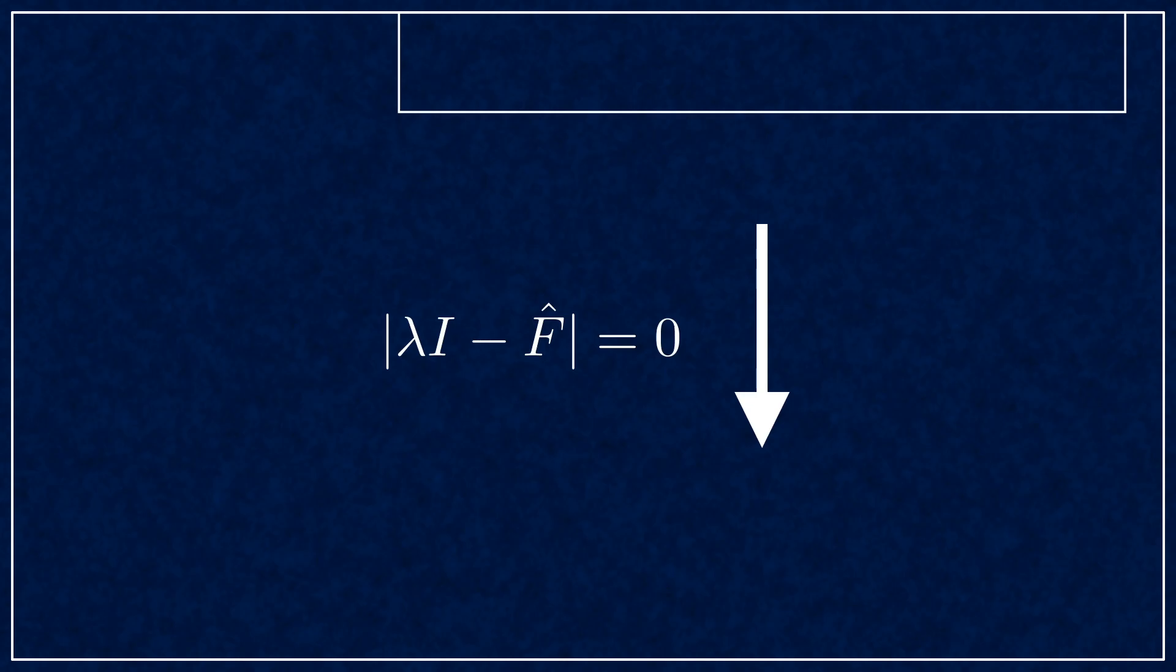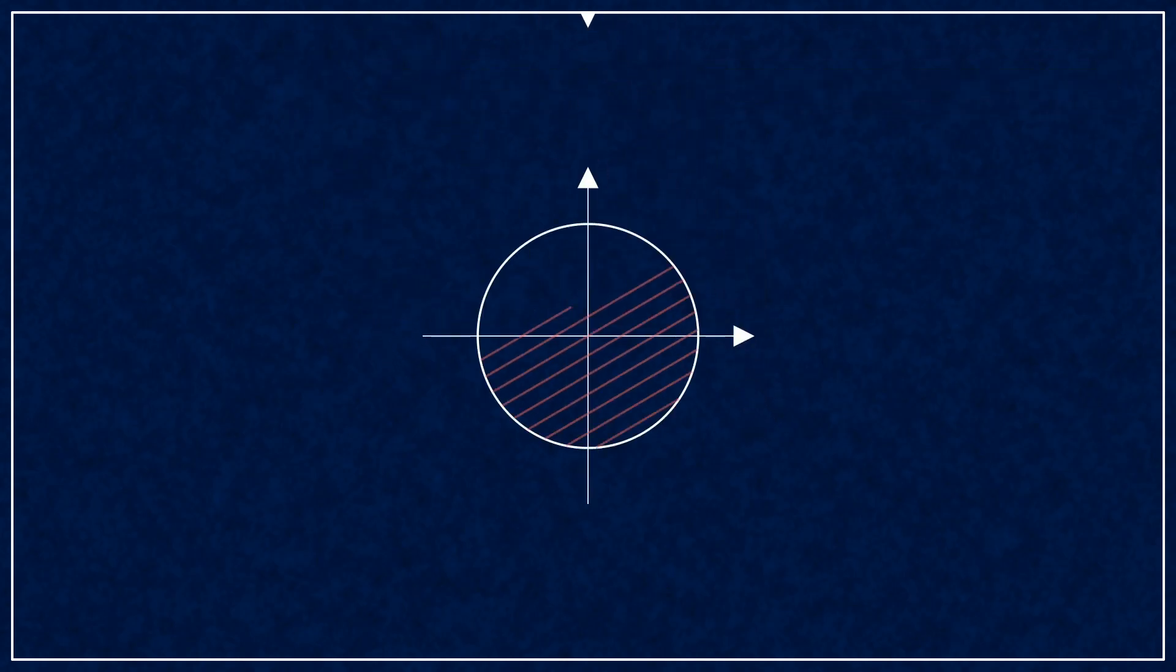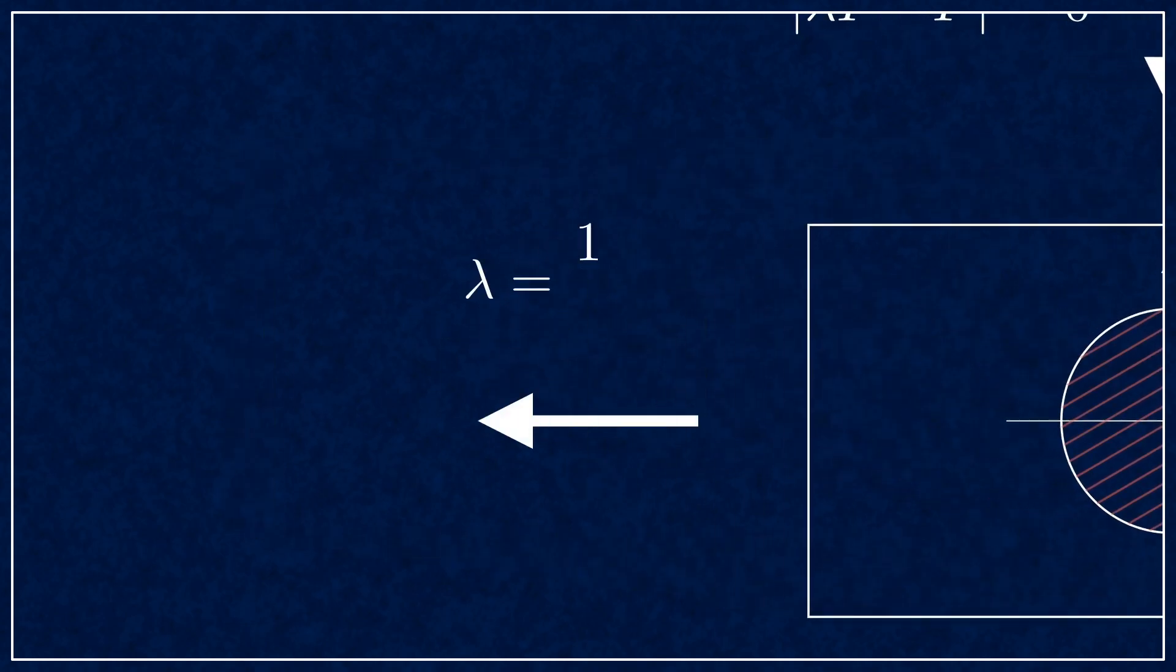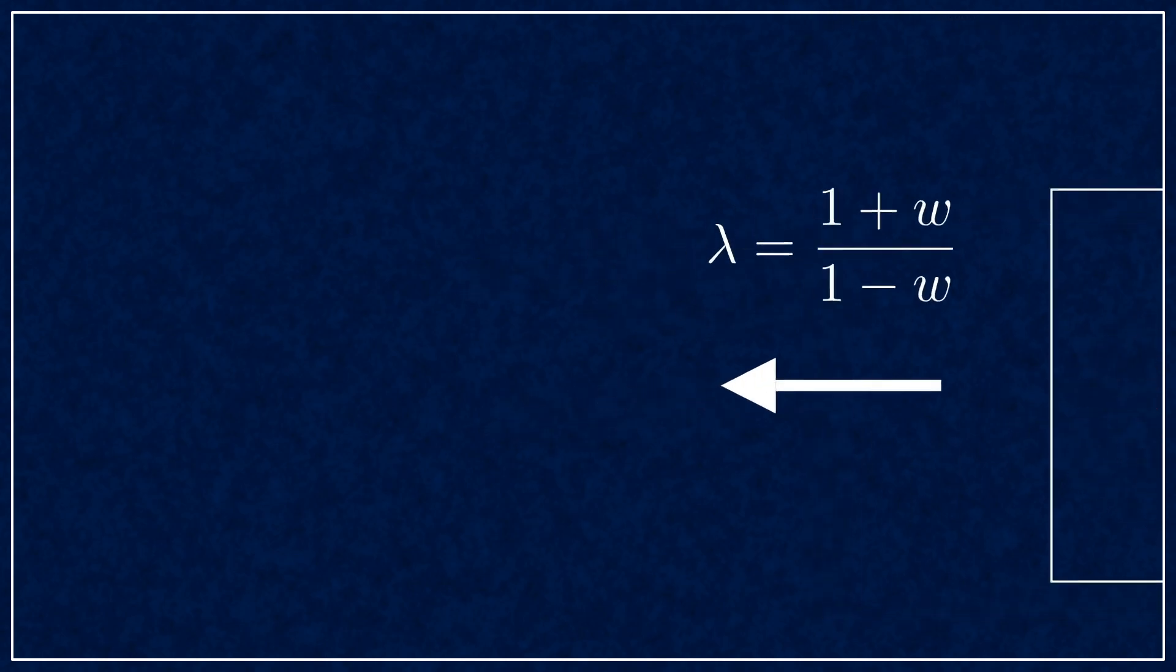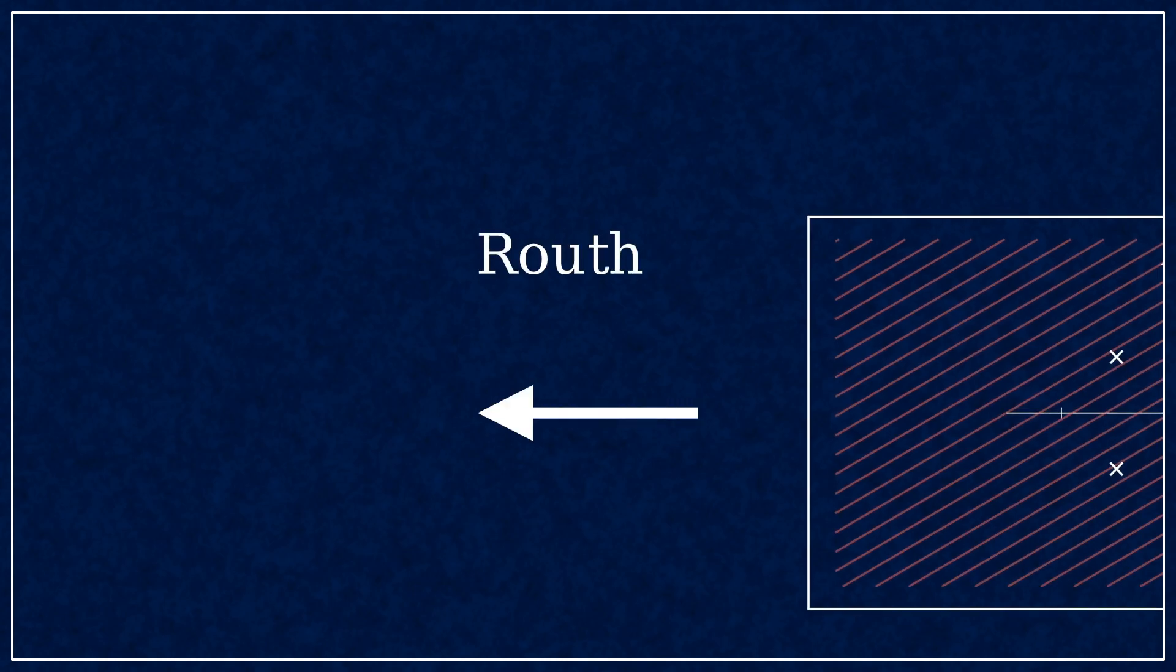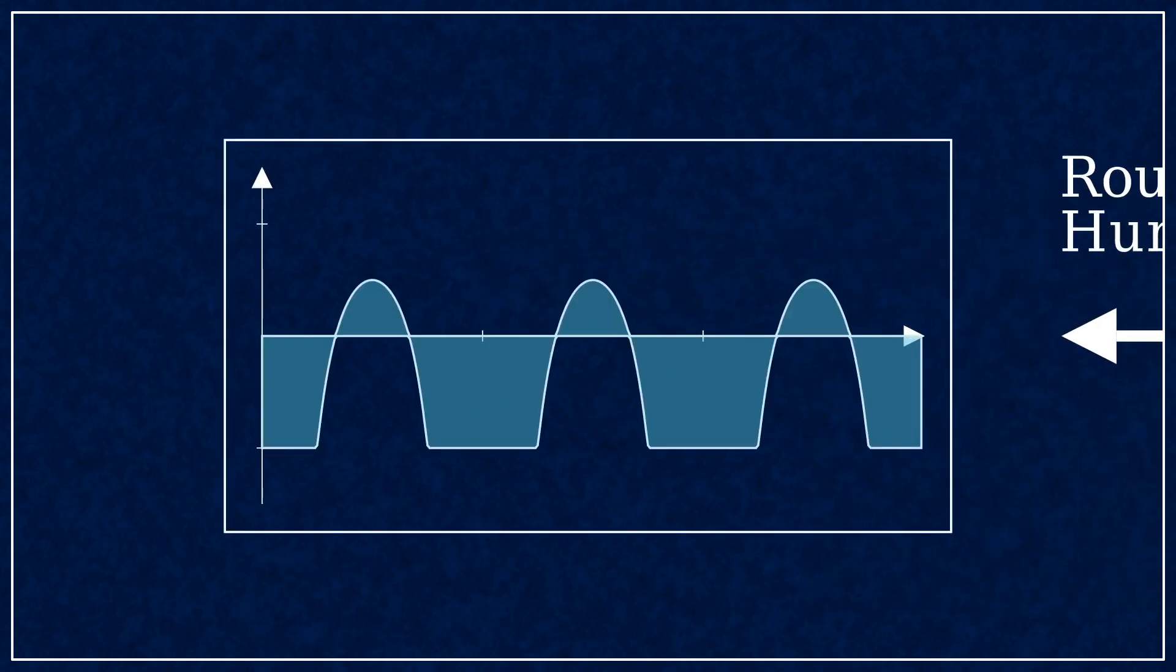Then you derive the characteristic equation of the closed loop system. The roots of this, the poles of the system, must lie inside the unit circle on the complex plane. This tends to be difficult to handle, so you apply the bilinear transform to get a new set of poles that need to lie on the left half plane. And for these set of poles, you can use the Routh-Hurwitz criteria to determine stability.